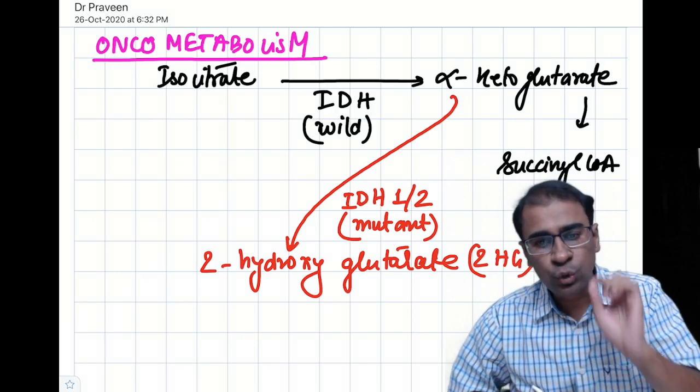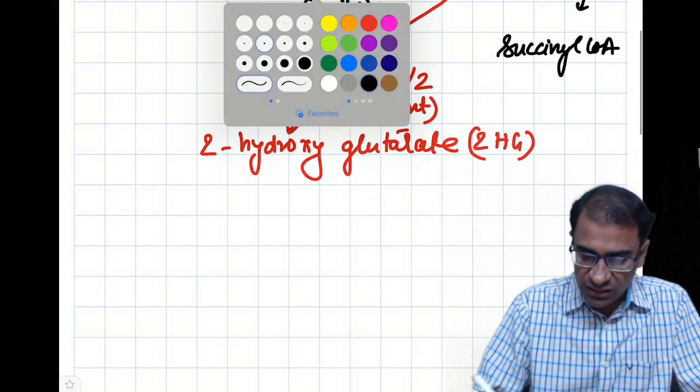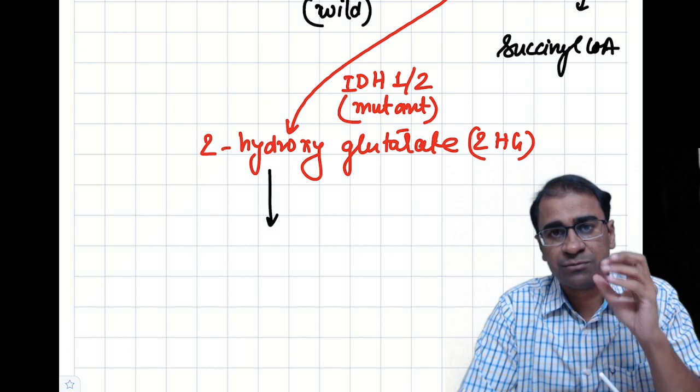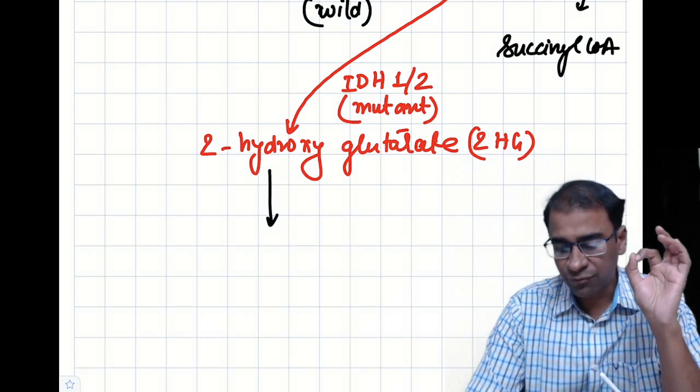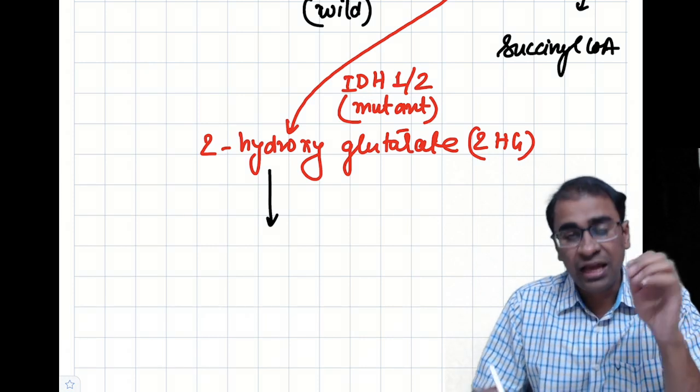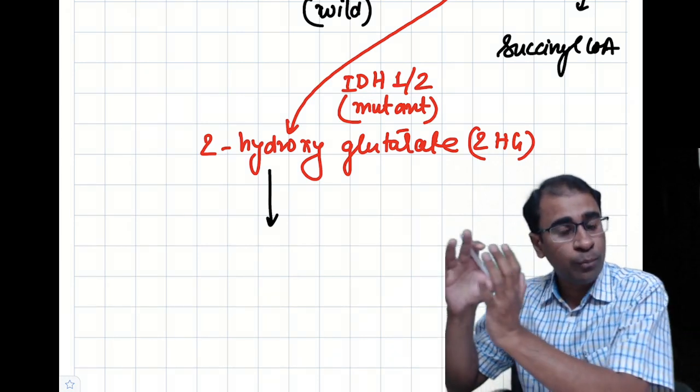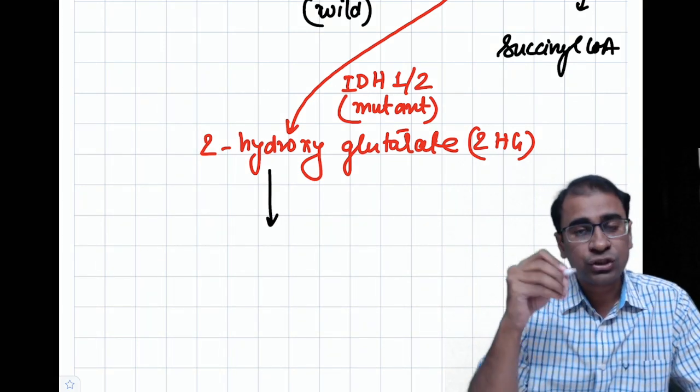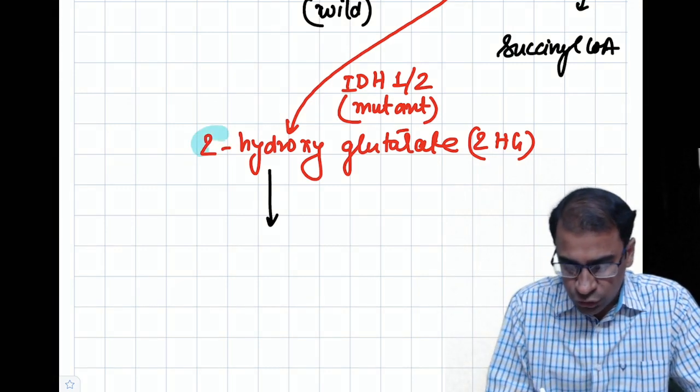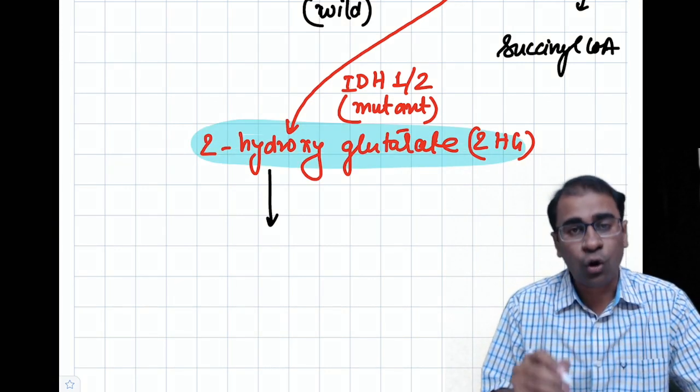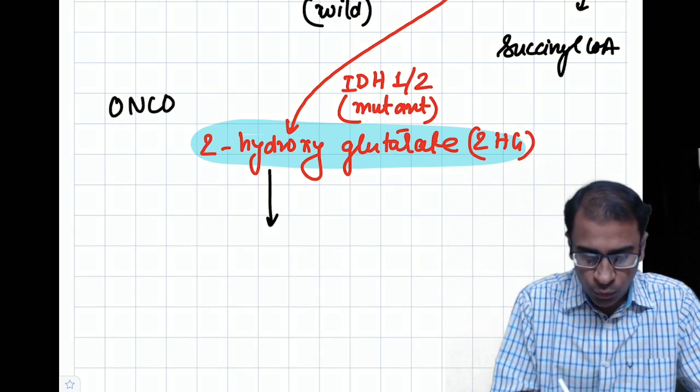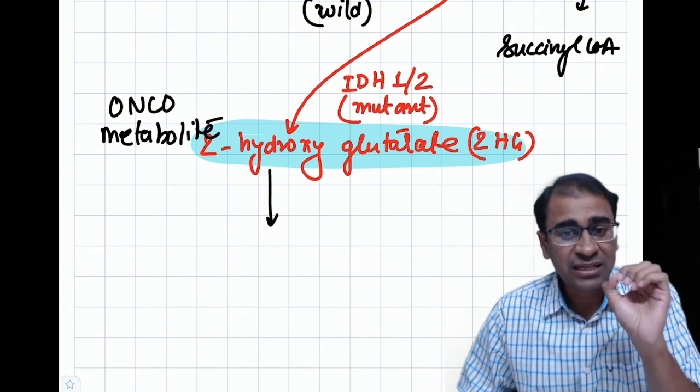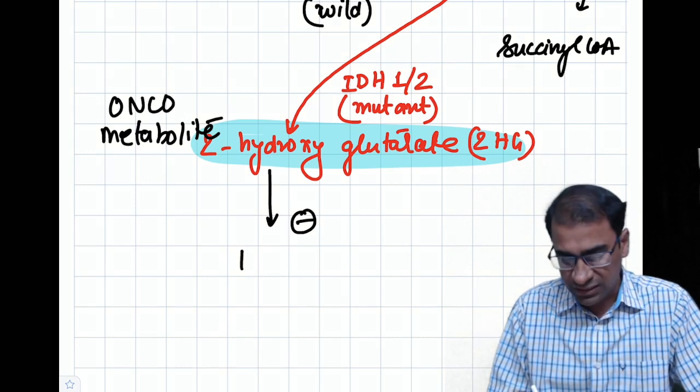This 2-HG starts inhibiting a variety of substrates because it now has a new function. The IDH mutation now acquires a new function because a new product is being formed called 2-hydroxyglutarate. This 2-hydroxyglutarate is called an oncometabolite. Why is it called an oncometabolite? The answer is this leads to an inhibition of a product called TET2.